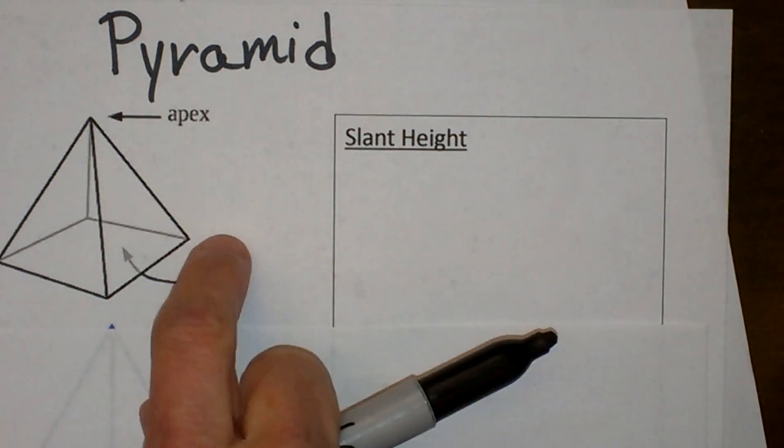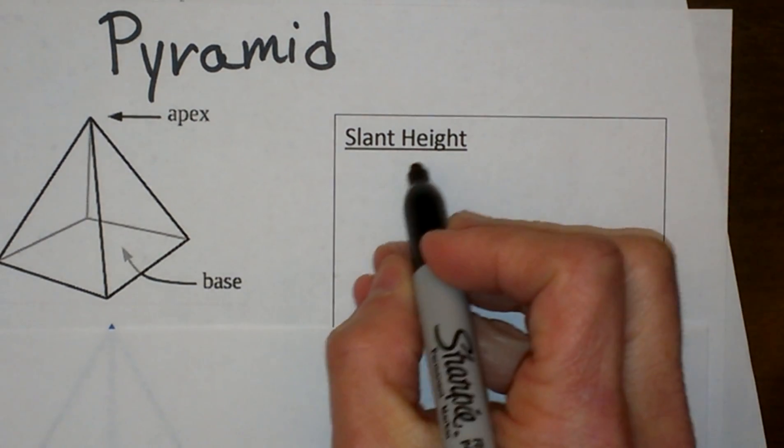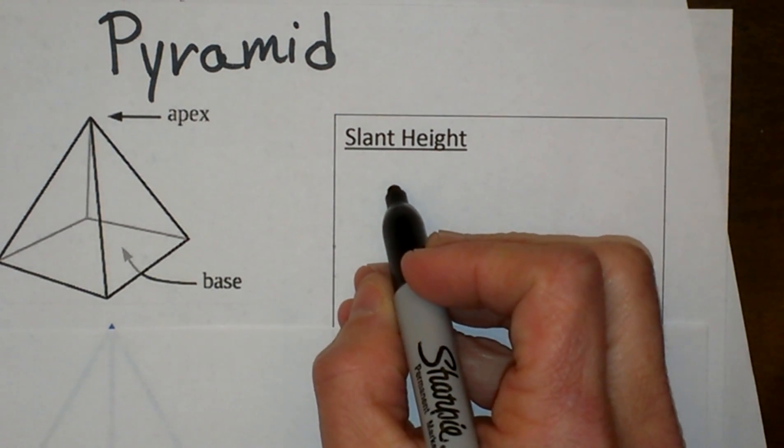and again we have the triangular faces. So we are going to focus on these triangular faces. For this particular problem we are going to talk about the slant height, and you are going to need the slant height when it comes to find surface area.